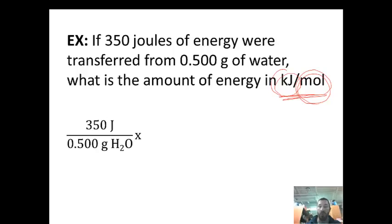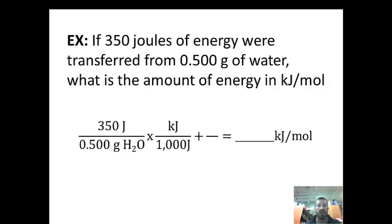So what we want to do is change joules to kilojoules and change grams of water to moles. The first step, we know there's 1,000 joules in a kilojoule, and so the joules cancel. And so now we've gotten rid of joules, and we in essence have kilojoules per gram. But we really want kilojoules per mole.